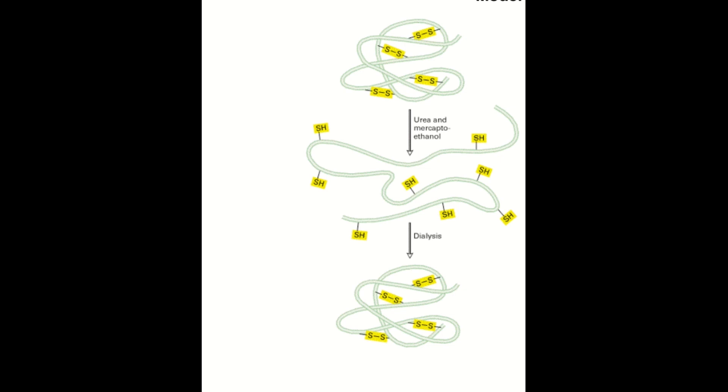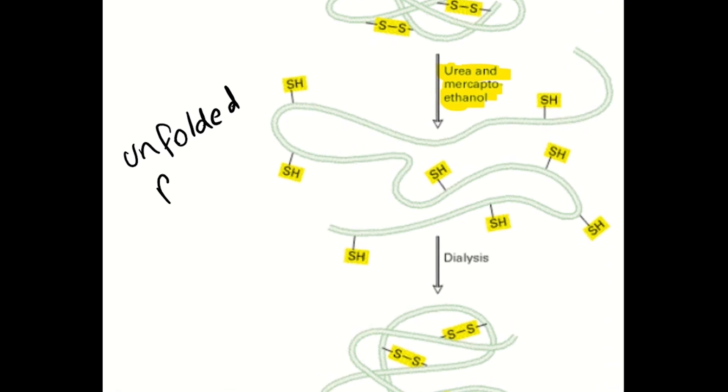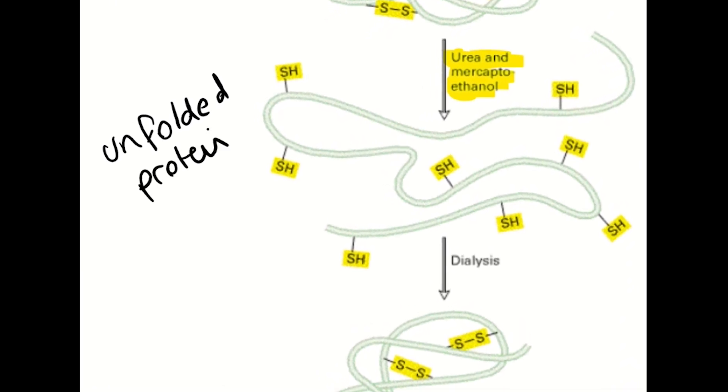So the protein that he was looking at is called ribonuclease. And to form the final 3D structure of ribonuclease, there are four bonds that are really important. And as I failed to mention earlier, it's the formation of a variety of different bonds between these different amino acids that actually enables these 3D structures of proteins to form. So what he did with this ribonuclease is that he added chemicals, in this case urea and mercaptoethanol, that caused these bonds to break, which you can see here. And this caused the structure of the protein to unravel.